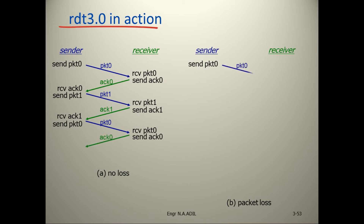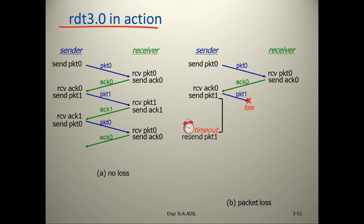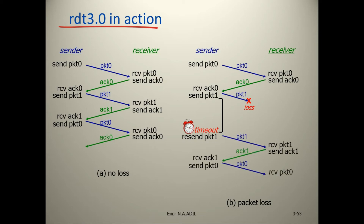Now the packet loss scenario: sender sends packet 0, receiver receives packet 0 and sends ACK 0. But packet number 1 is lost, so timeout occurs and the sender resends packet number 1. The receiver then receives packet 1 and sends acknowledgement 1. The sender then sends the next packet with sequence number 0, and this carries on.